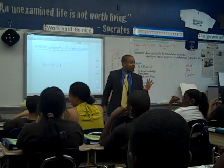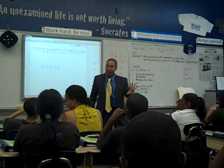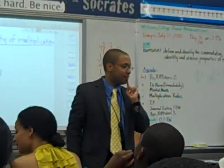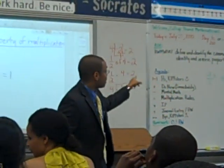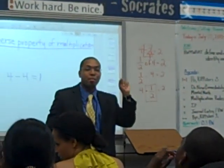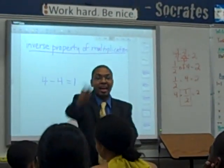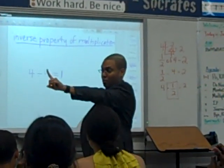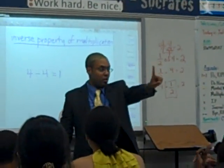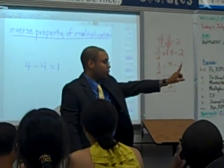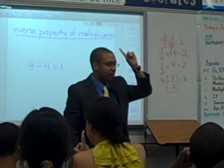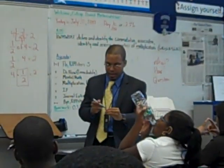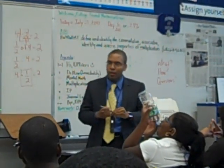Because in math, we know how to get to zero, right? We always add a number to its opposite. In multiplication, we multiply a number by its reciprocal to get back to one.